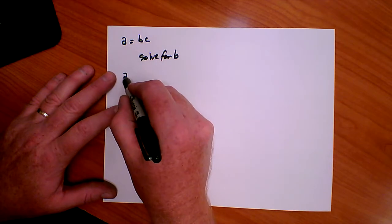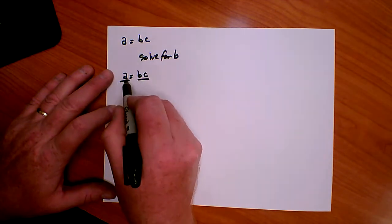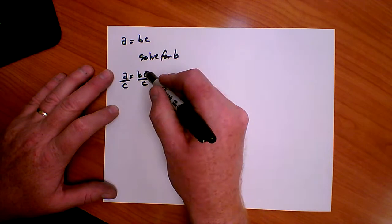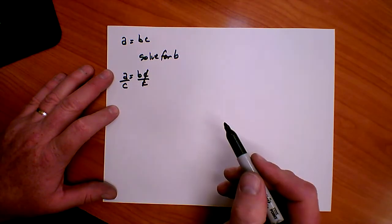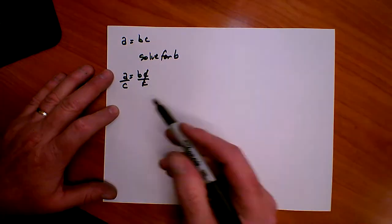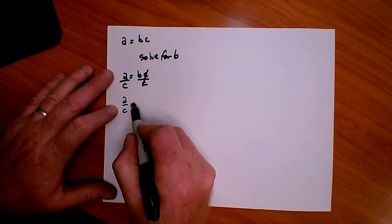So A equals BC. I'm going to divide both sides by C. The C over here will be cancelled out. And I'm left with A over C equals B.